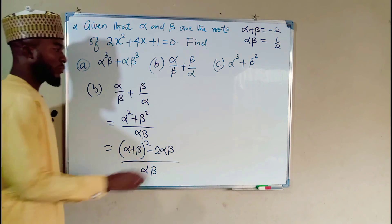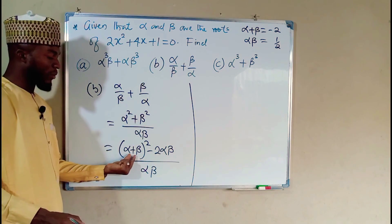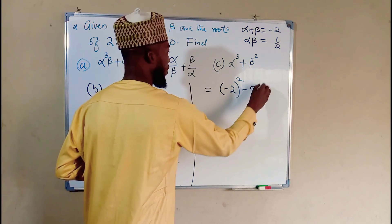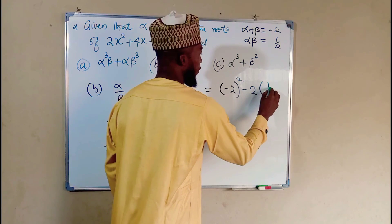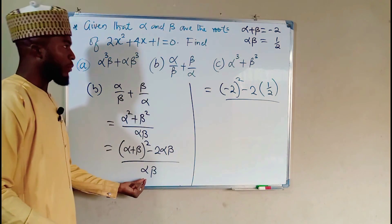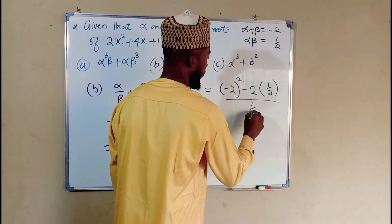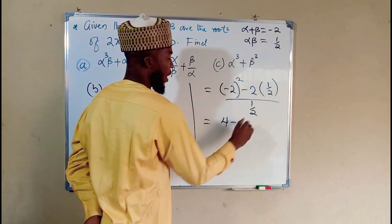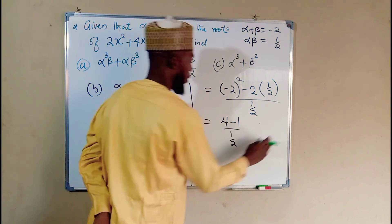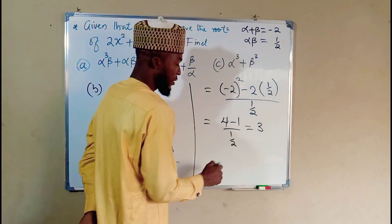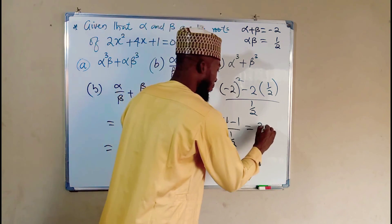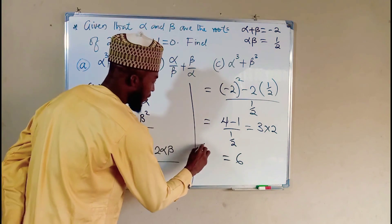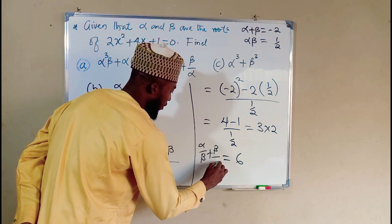Now let us substitute everything here. Alpha plus beta is negative 2 squared, minus 2 times alpha times beta which is 1 over 2, all divided by alpha times beta which is 1 over 2. This equals 4 minus 1, which is 3, divided by 1 over 2. Dividing by 1 over 2 is the same as multiplying by 2. Hence, this is equal to 6, which is the value of alpha over beta plus beta over alpha.